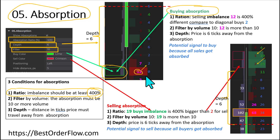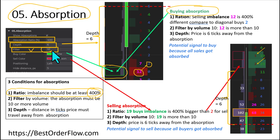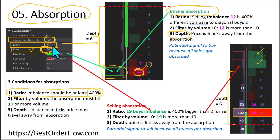The value 12 is the selling imbalance, and 12 is 400 percent higher than 2 — that's the first condition. The second condition is filter by volume: the volume should be no less than 10. Obviously 12 is more than the filter threshold of 10, so that condition is met. The third condition is depth — selected here as 6 ticks — meaning the price must travel at least 6 ticks from this area.